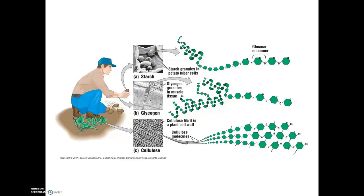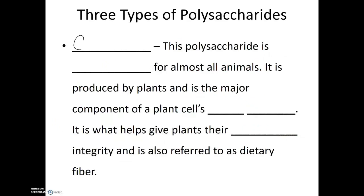There's a third type of polysaccharide, one made exclusively by plants and not easily digestible. This is known as cellulose. Cellulose is indigestible for almost all animals. It is produced by plants and is the major component of plant cells' cell walls. It helps give plants their structural integrity and is also referred to as dietary fiber.